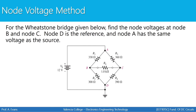Moving on to the next problem, we're going to analyze a Wheatstone bridge and find the voltages at node B and node C. Node D is the reference node, and node A has the same voltage as the source, so we already know VA. You've seen this bridge circuit before — solved using a Thevenin equivalent and a delta-to-Y conversion. The node voltage method is now a third tool to solve it, and all three methods are equivalent.